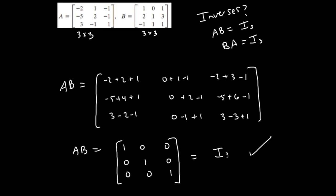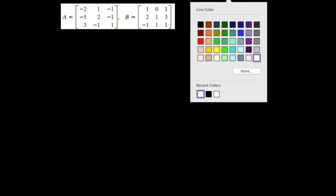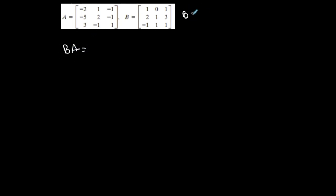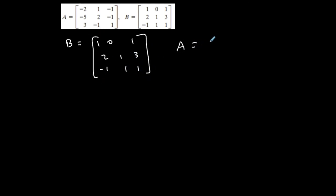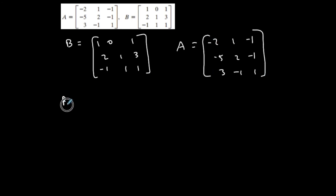It also has to be BA. Let me copy this so I have the matrices again. Now we're going to check direction BA — it must also equal the identity matrix I₃. I personally like to write the first matrix first and the second matrix second, because that's how I multiply matrices. So I'll rewrite this organized so it's easier to compute the product. B is written first, then A: negative two, one, negative one; negative five, two, negative one; three, negative one, one.